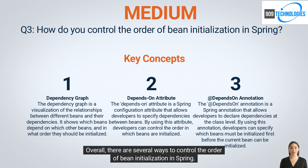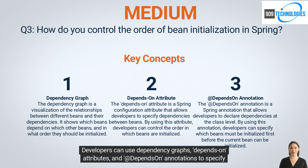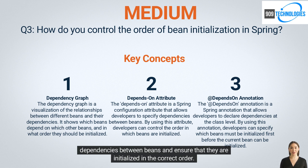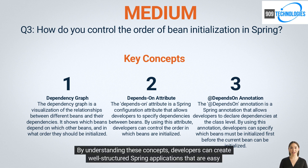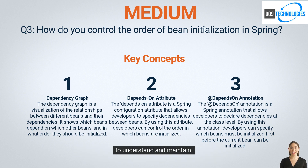Overall, there are several ways to control the order of bean initialization in Spring. Developers can use dependency graphs, depends-on attributes, and depends-on annotations to specify dependencies between beans and ensure they are initialized in the correct order. By understanding these concepts, developers can create well-structured Spring applications that are easy to understand and maintain.